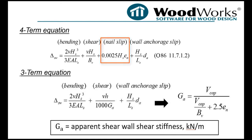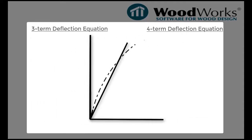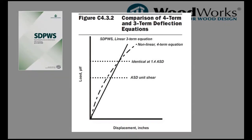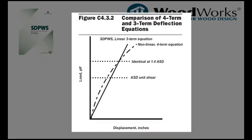The nail slip component in the four-term deflection equation makes the equation nonlinear, but if you simplify the equation to the three-term deflection equation, it becomes linear. This SDPWS figure illustrates the difference between the three-term and the four-term deflection equations.